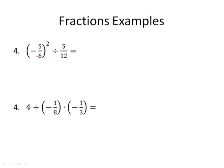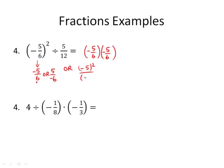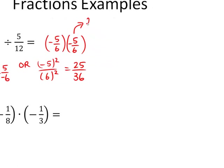Here are some questions that combine the operations. This one, number 4, starts with squaring this fraction. Remember, squaring means multiplying it by itself, so you can feel free to write it out. A good point here is that the negative in front of a fraction — if you want to write it into one term — you could say either negative 5 over 6 or 5 over negative 6. Squaring negative 5 sixths would be negative 5 squared over 6 squared, which gives you 25 over 36. You could also do negative 5 times negative 5, which is positive 25, and 6 times 6, which is also 36. Either way, you get 25 over 36.